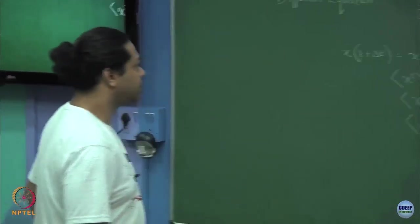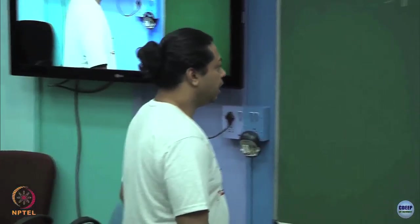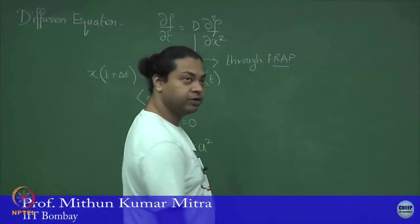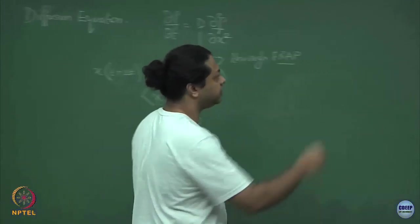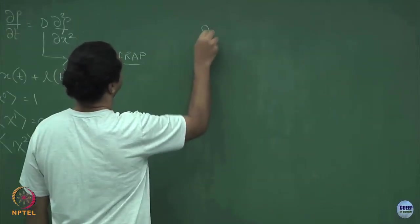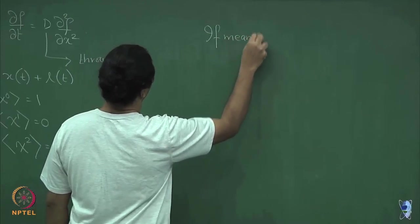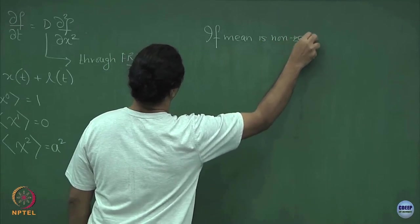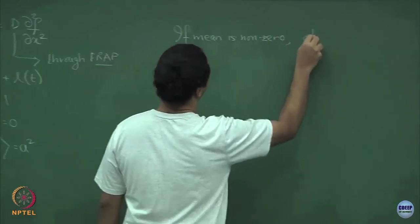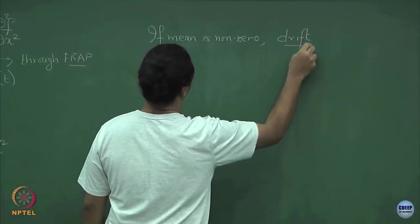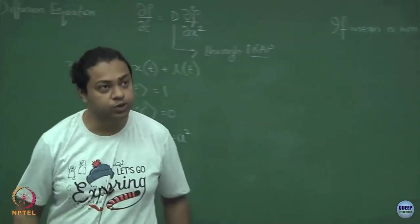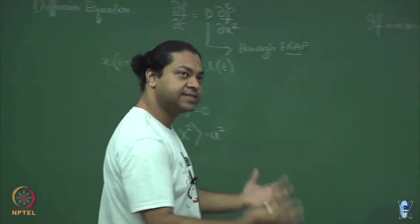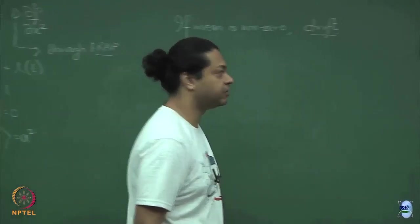You could have a particle undergoing diffusion even when this mean is nonzero. And if this mean is nonzero, what you would have is a net drift term. If the mean is nonzero, you would have a net drift term where, in addition to doing random things, overall if you look for large enough scales, the particle is moving net in some direction — it has some drift velocity.